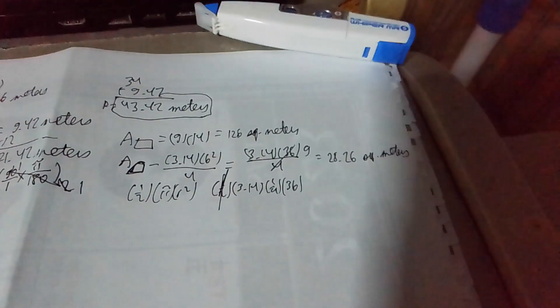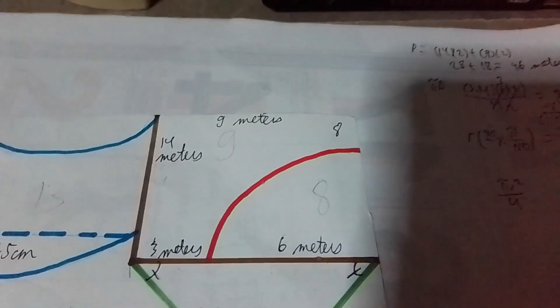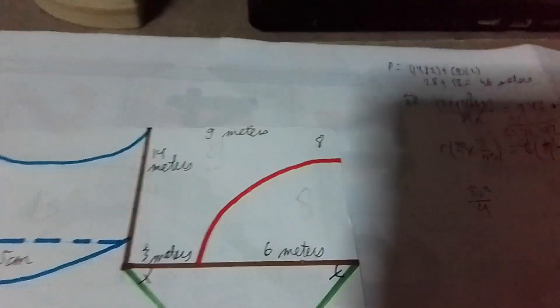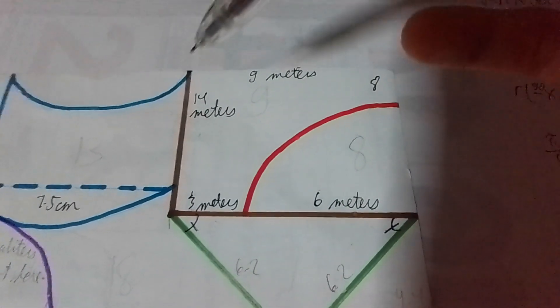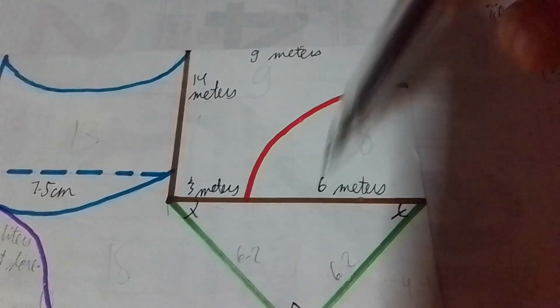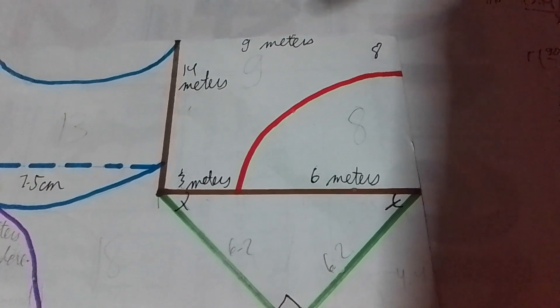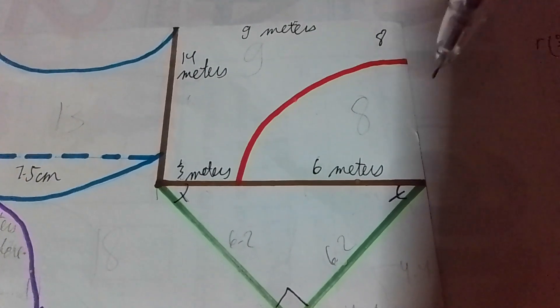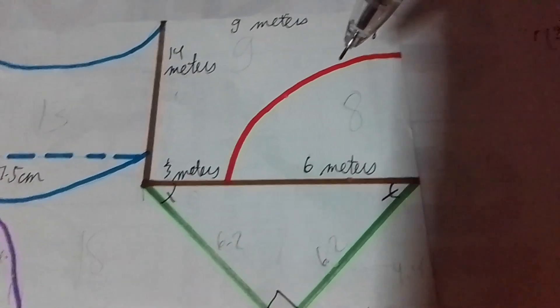Now, are we done? Not yet, but we're almost there. All we just need to do is to simply subtract. Remember, we just want to get this area. If you're asked to solve for the area of the shaded region, you will have to get the area of the rectangle and deduct it with the area of the one-fourth of the circle. It's just like area of the shaded region.